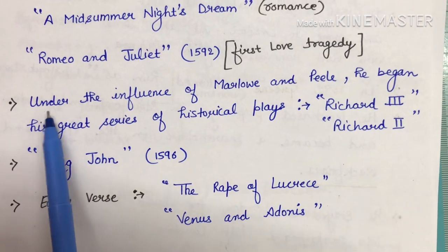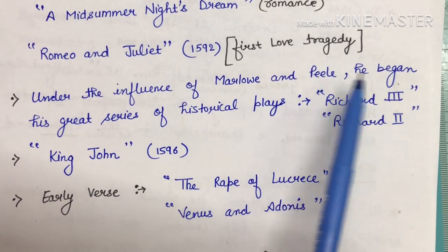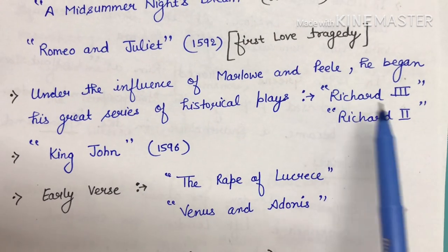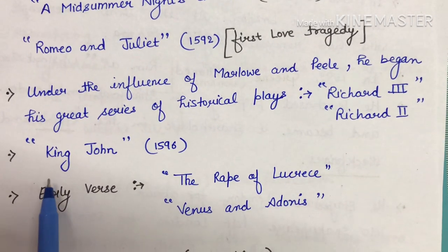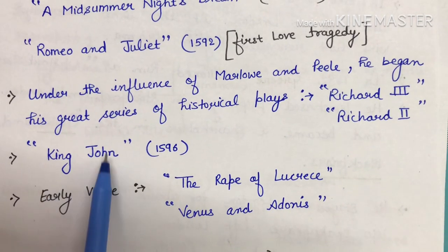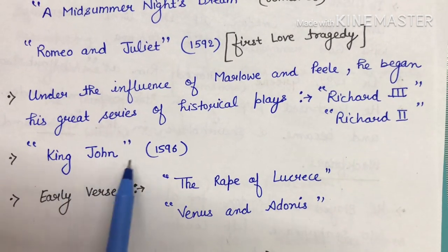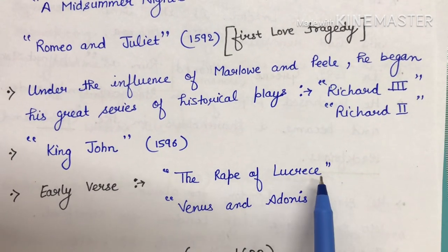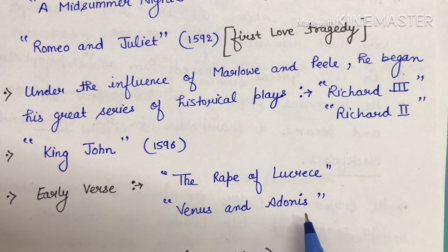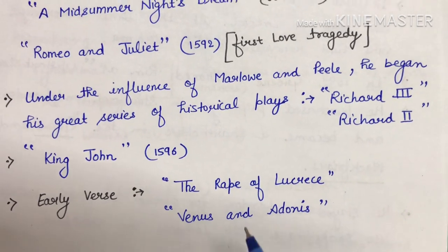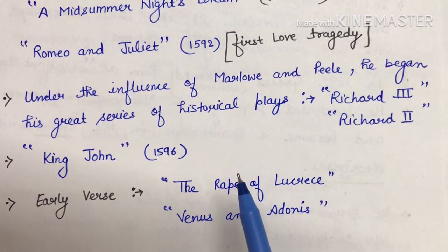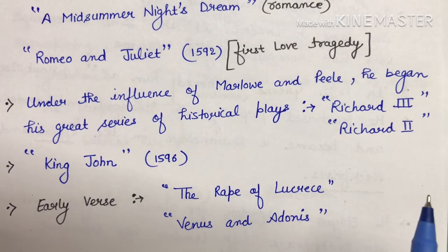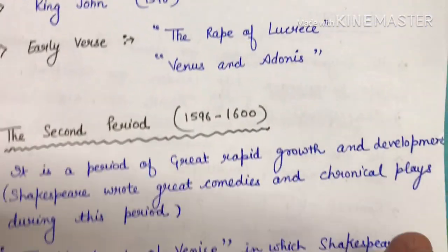Shakespeare was influenced by the patriotic feeling represented in Marlowe's and Peel's plays. Under their influence, he began his great series of historical plays and wrote Richard 2 and Richard 3. The first period came to an end with King John in 1596. He also wrote early verse — The Rape of Lucrece and Venus and Adonis — which belong to this period. The dramatic work of the first period is quite immature.